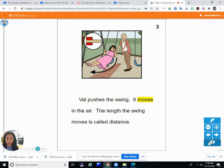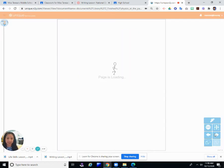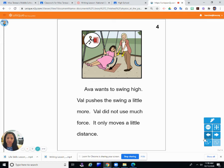Val pushes the swing. It moves in the air. The length the swing moves is called distance. So Val, the babysitter, pushed the swings and it moved Ava forward. It moves through the air. And the length of the swing moves is called the distance. So starting from here and wherever they swung to, wherever Ava swung to is the distance.